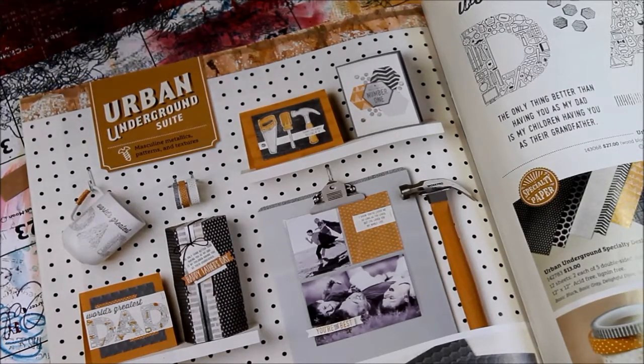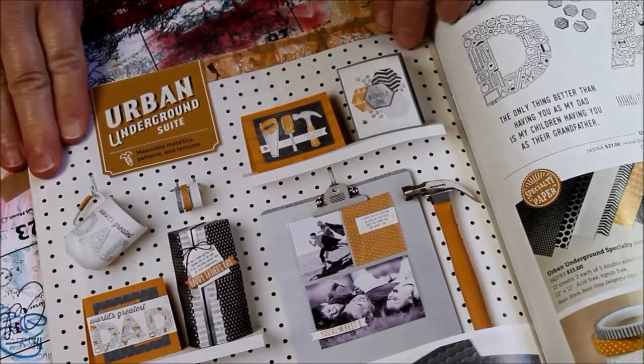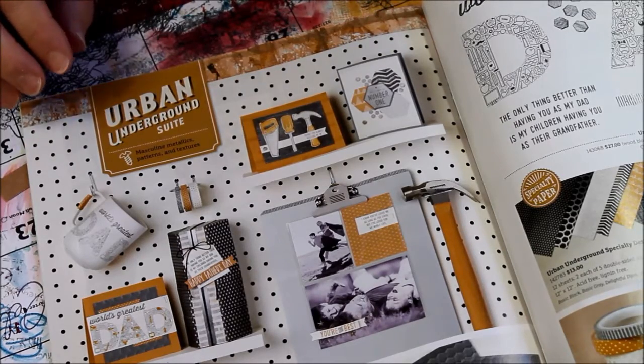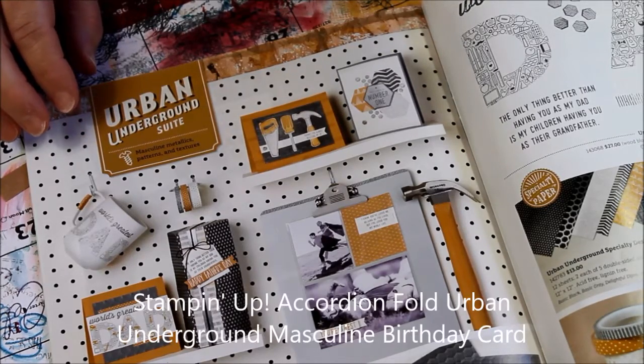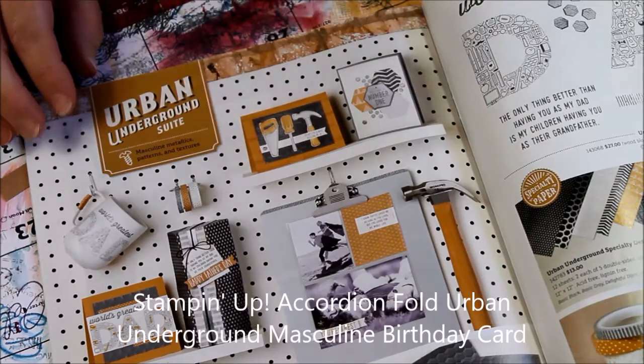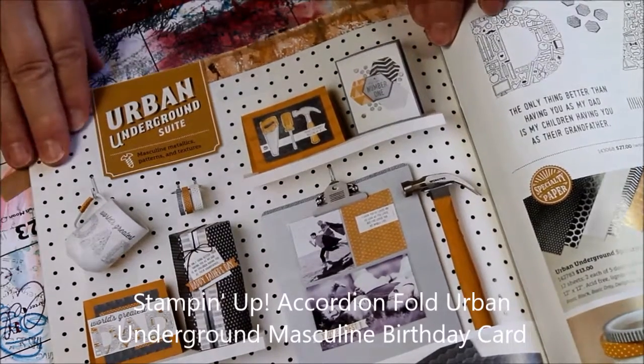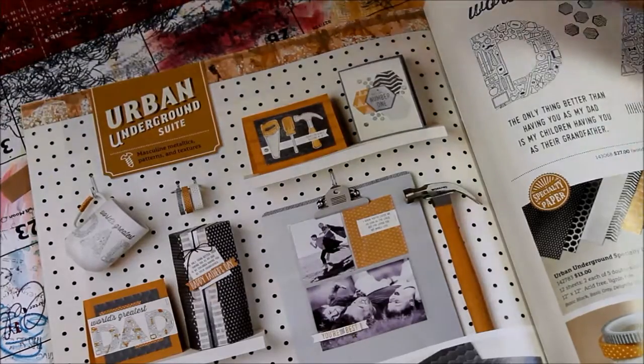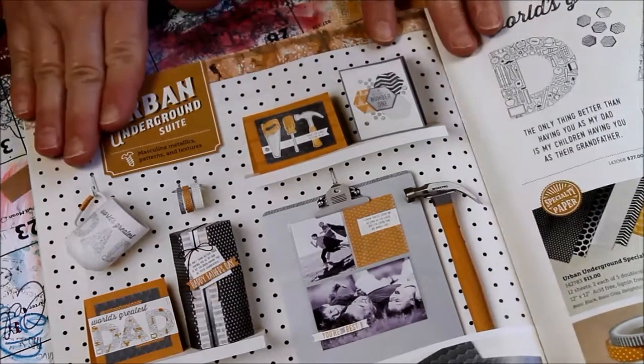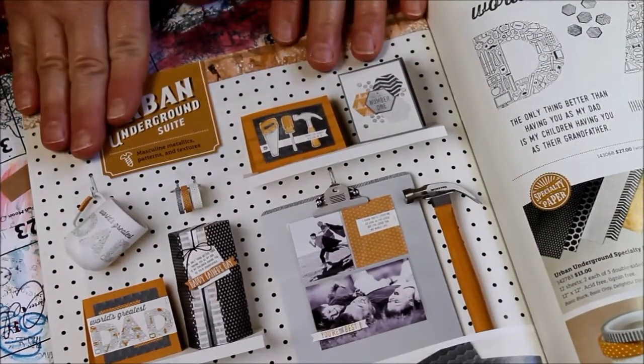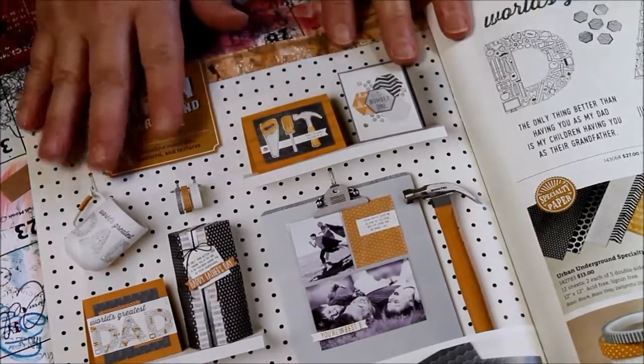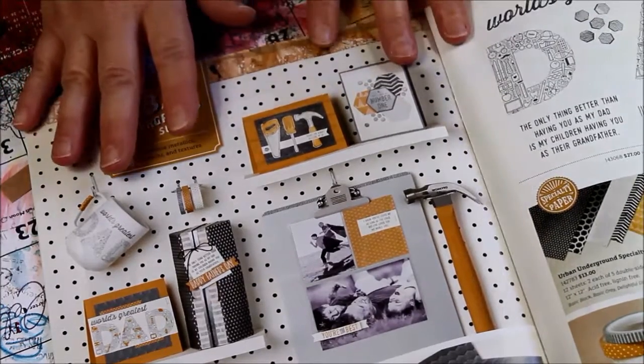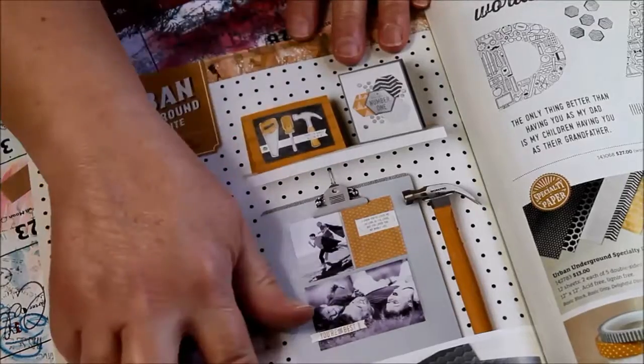Welcome to my roost. I'm sharing with you an accordion fold masculine card using the Urban Underground suite from the Occasions Catalog 2017. I just fell in love with this suite. When I first saw it, I thought it was okay, but now that I've got the stuff and started playing with it, it is awesome.